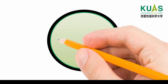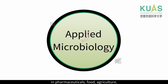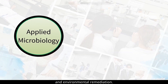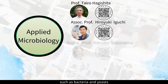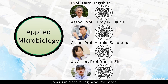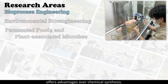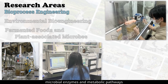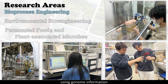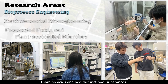In applied microbiology, students explore microbial functions related to genes, proteins, and metabolites for applications in pharmaceuticals, food, agriculture, and environmental remediation. We isolate original microbes such as bacteria and yeasts from environmental samples around Kyoto and analyze their useful functions using chemical and genetic engineering techniques. Join us in discovering novel microbes and their limitless potential. Microbial production offers advantages over chemical synthesis. In this field, students investigate microbial enzymes and metabolic pathways using genome information to create environmentally friendly and cost-effective production reactions. Our focus includes converting general materials into higher-value products like D-amino acids and health-functional substances.